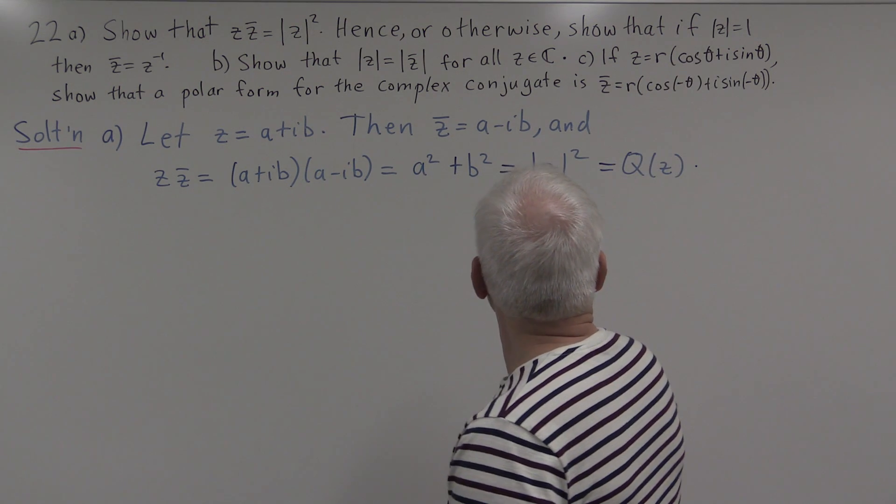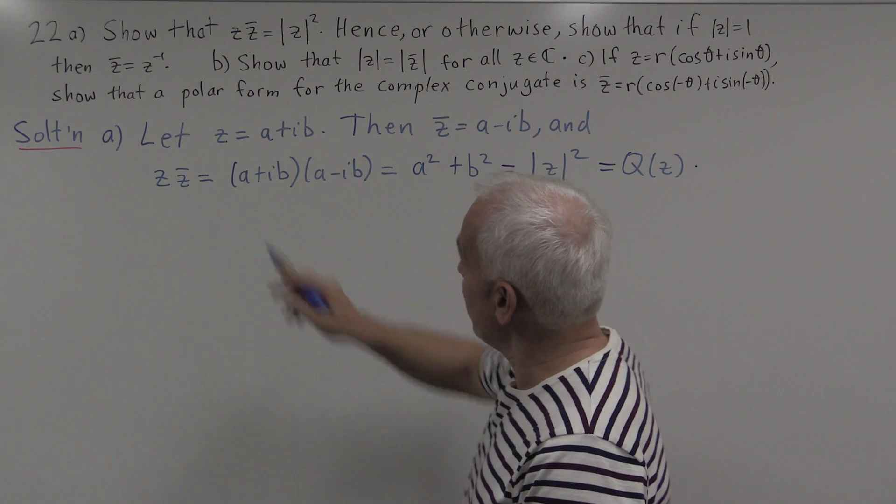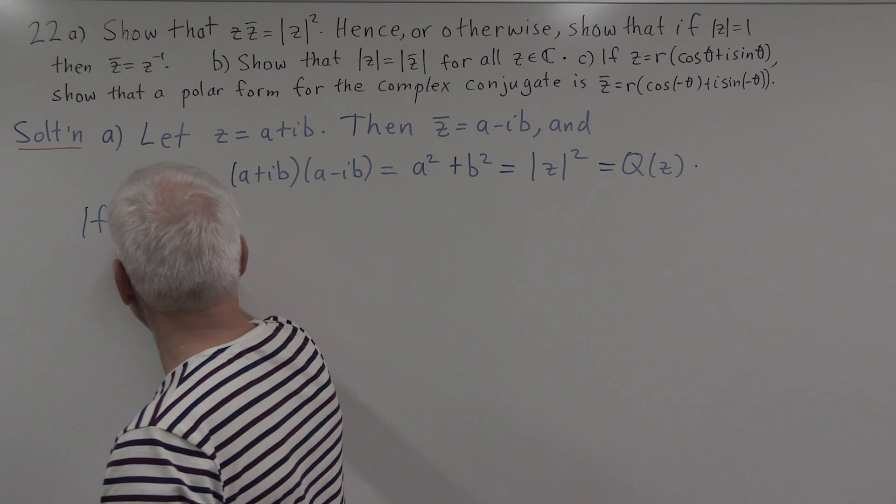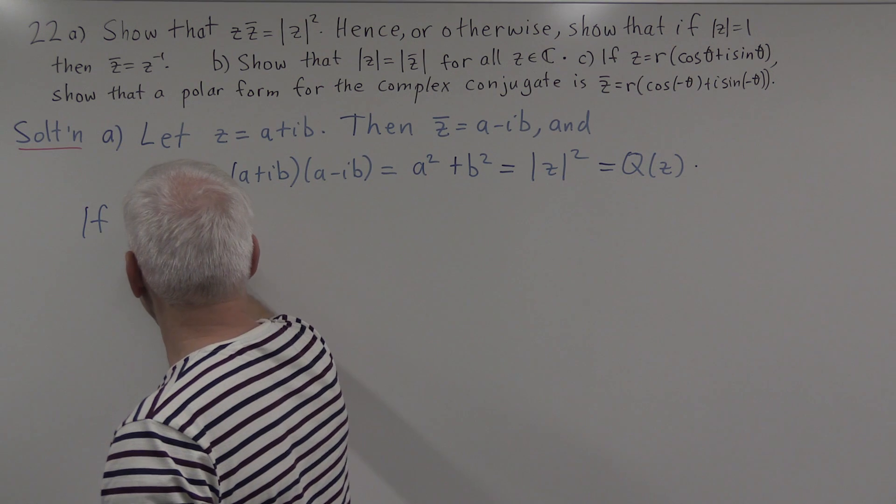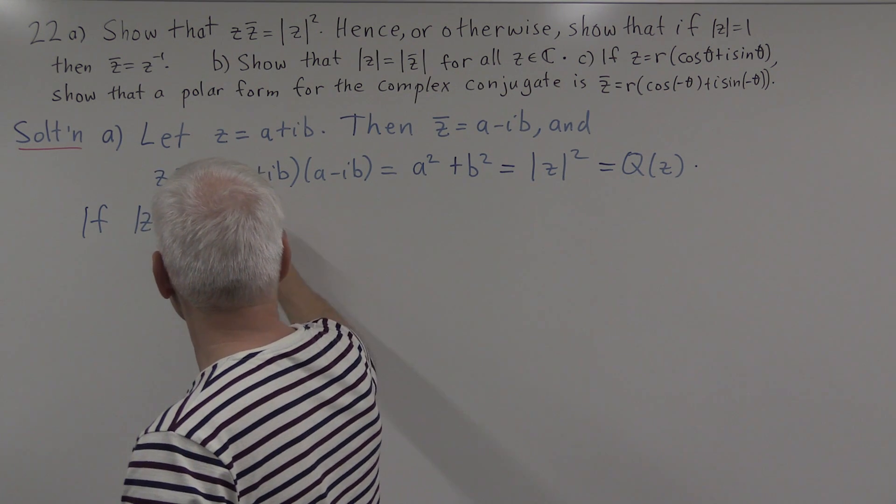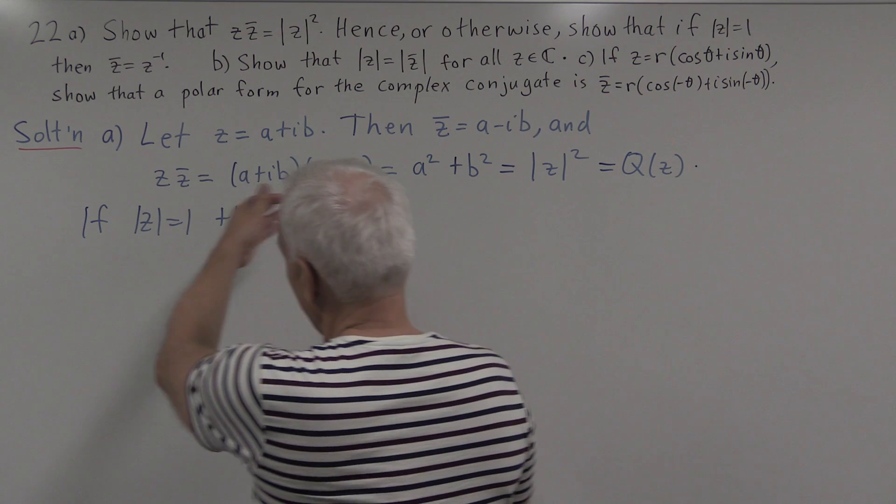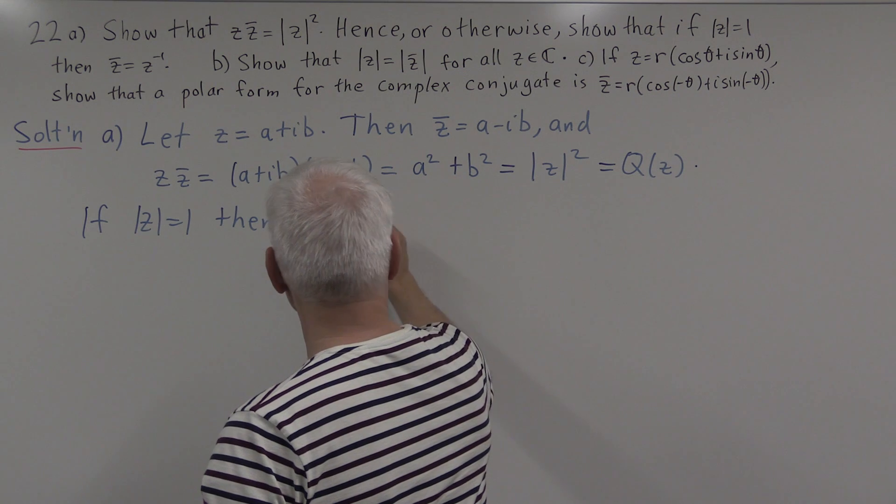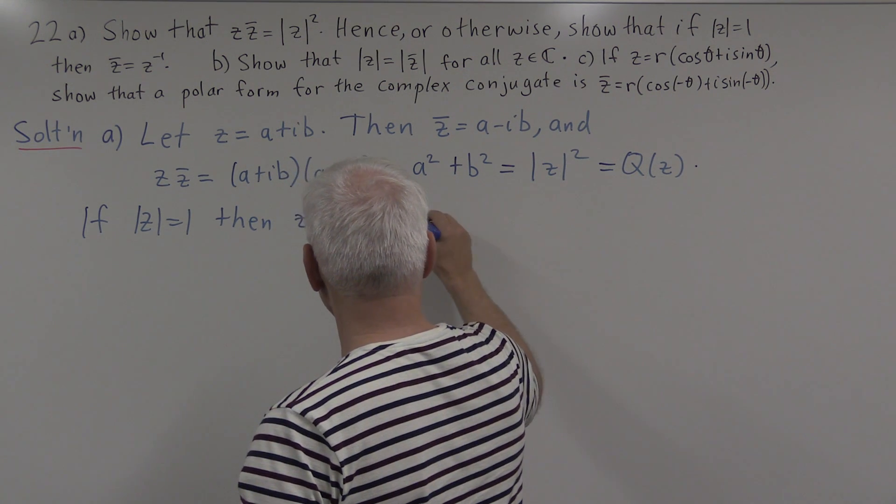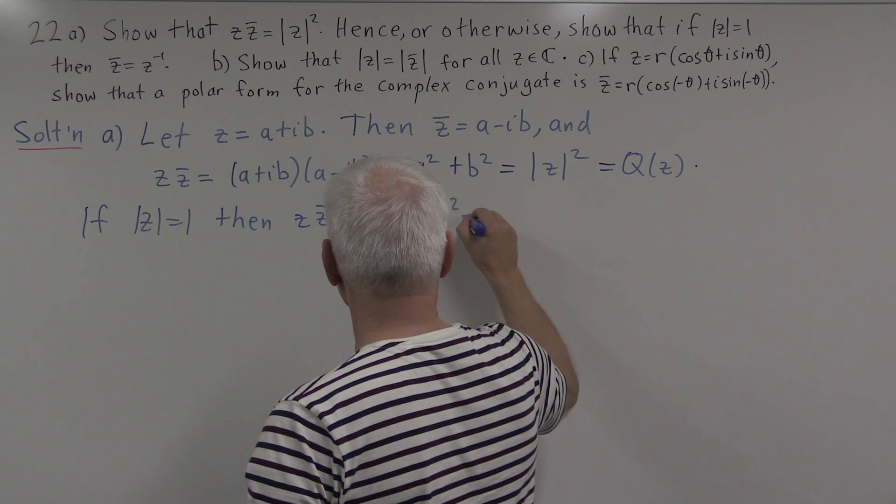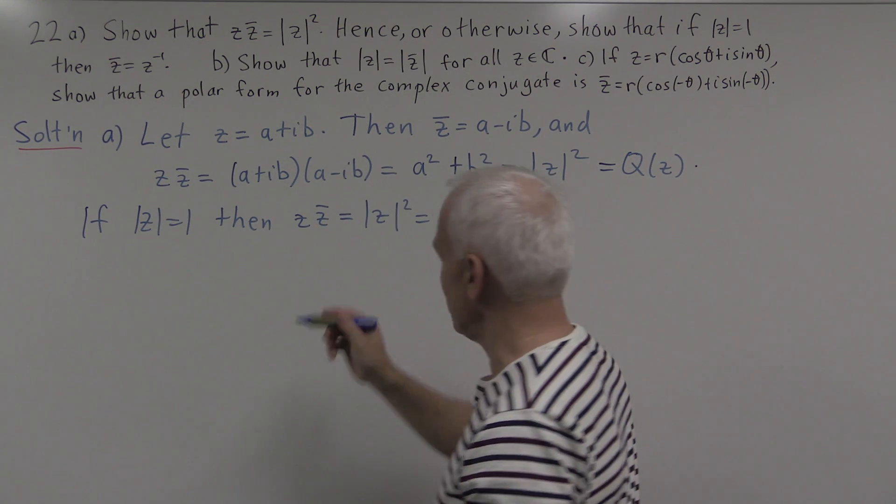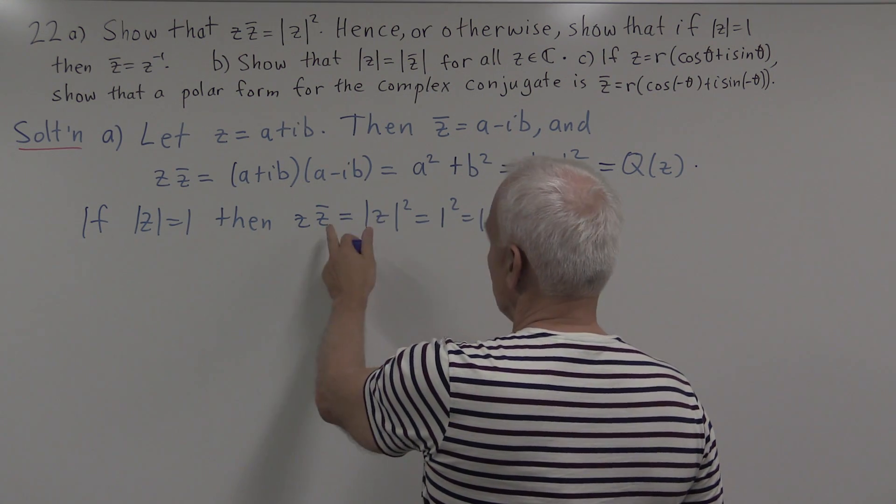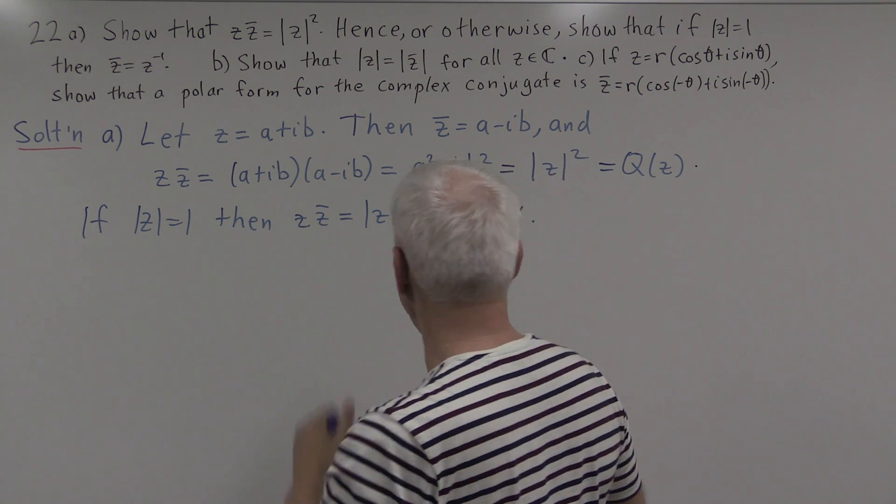What about the second part, that if the modulus of z equals 1, then z-bar equals z inverse? Alright. So if the modulus of z equals 1, then from what we've just established, z times z-bar will be equal to the modulus of z squared, which will then be 1² or 1. Which is telling us therefore that z times z-bar is 1, so z-bar is the inverse of z.